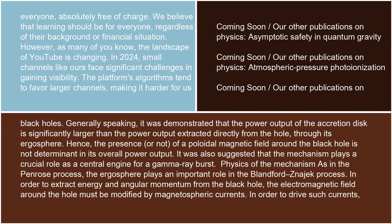Generally speaking, it was demonstrated that the power output of the accretion disk is significantly larger than the power output extracted directly from the hole through its ergosphere. Hence, the presence or absence of a poloidal magnetic field around the black hole is not determinative in its overall power output. It was also suggested that the mechanism plays a crucial role as a central engine for a gamma-ray burst.